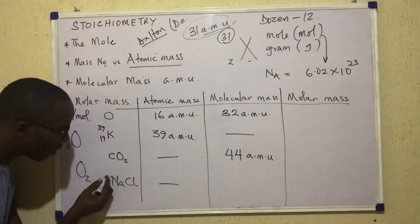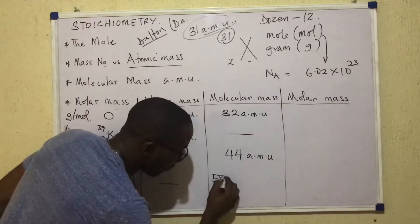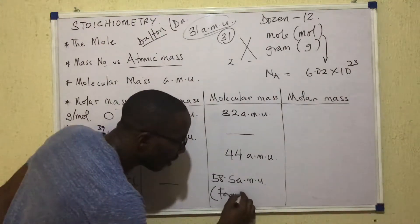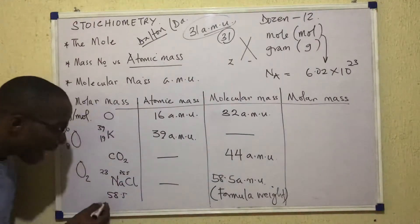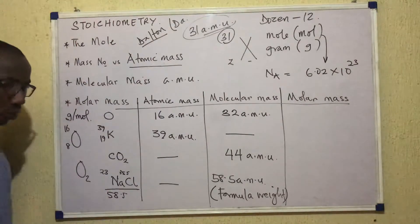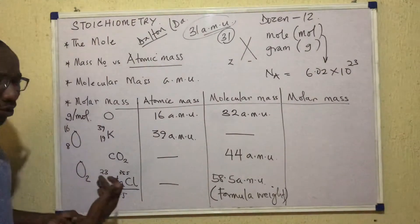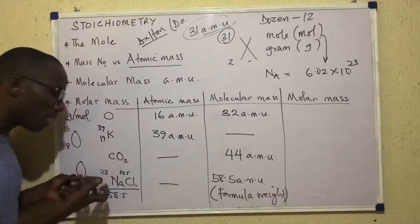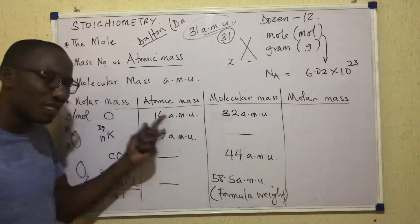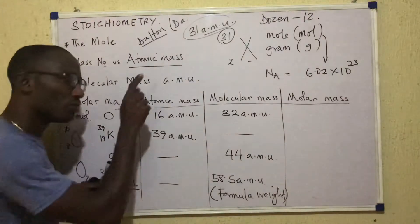So if I calculate: Na is 23, Cl is 35.5, added together gives 58.5 AMU. But I will not call it molecular mass. Instead, I will call it formula weight, because electrovalent species like NaCl that cannot be called molecules are called formula units. We can say one molecule of CO₂, two molecules of HCl, five molecules of ammonia — all covalent. But for NaCl, we say one formula unit, and the mass of a formula unit is called formula weight, just as the mass of a molecule is called molecular mass.